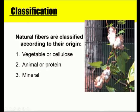A further classification of natural fibers is according to their origin — where the starting material for the fibers is obtained. One class is vegetables or cellulose-based fibers, another is animals or protein-based fibers, and the third is minerals, which are inorganic fiber materials.